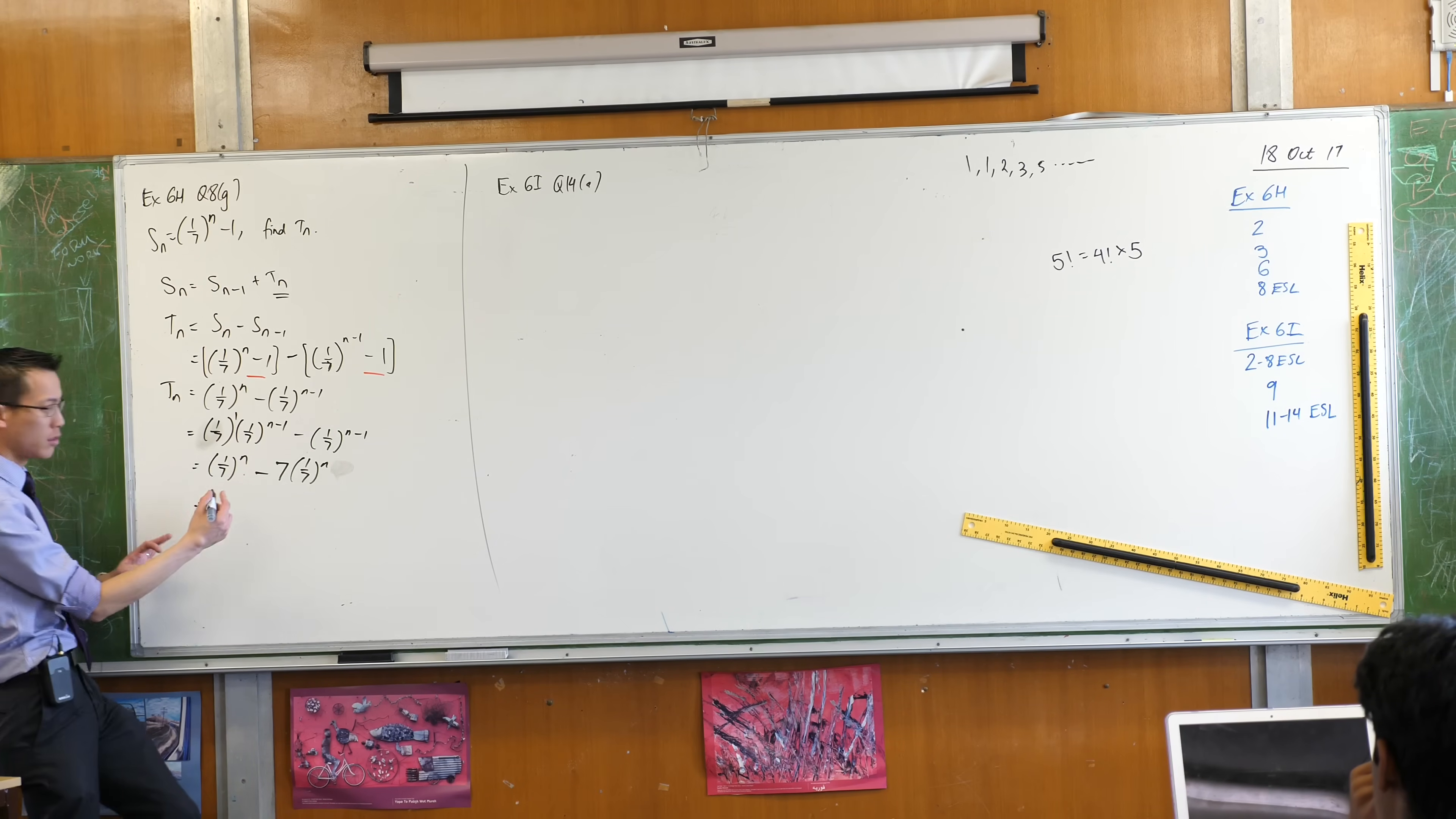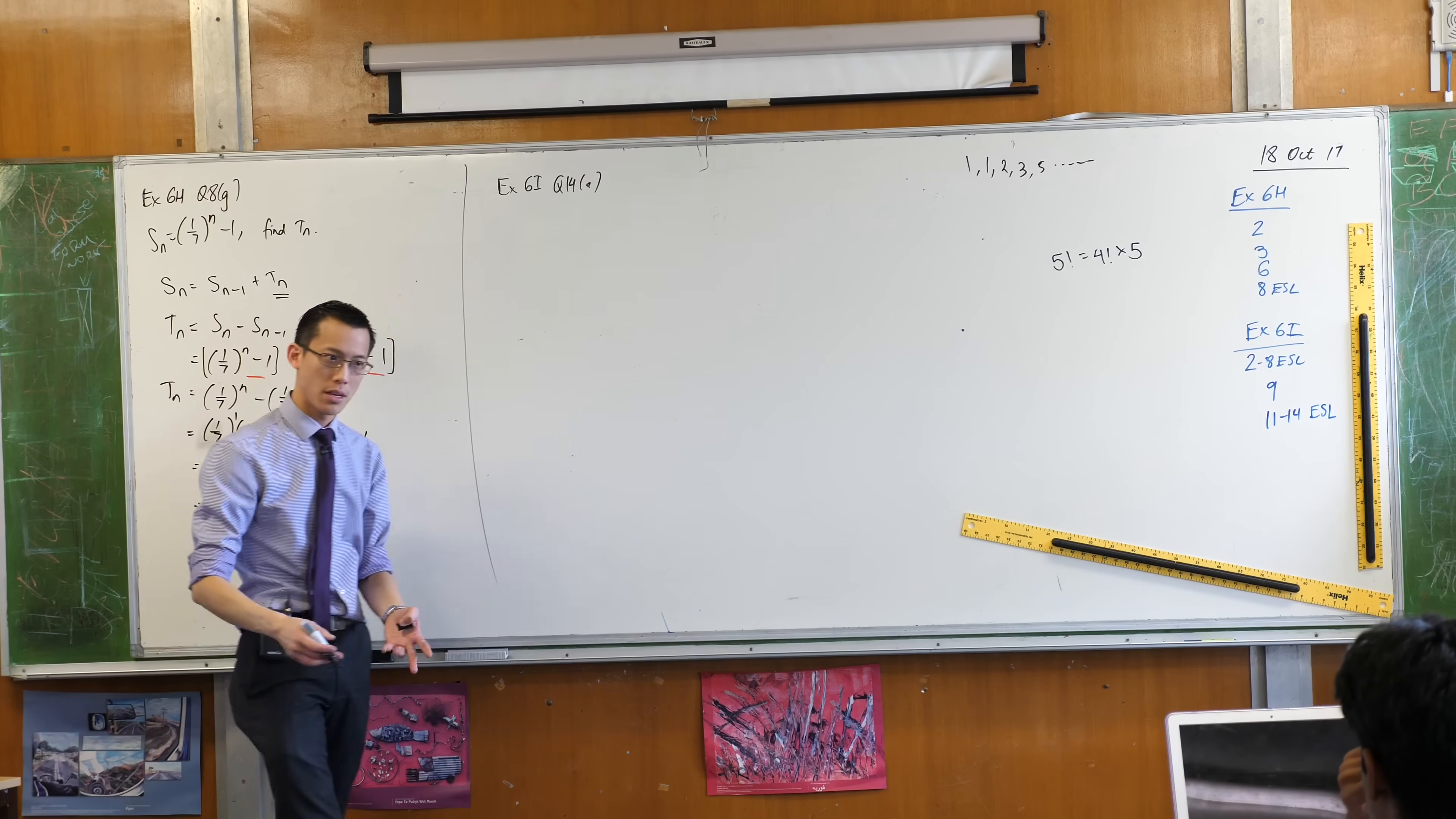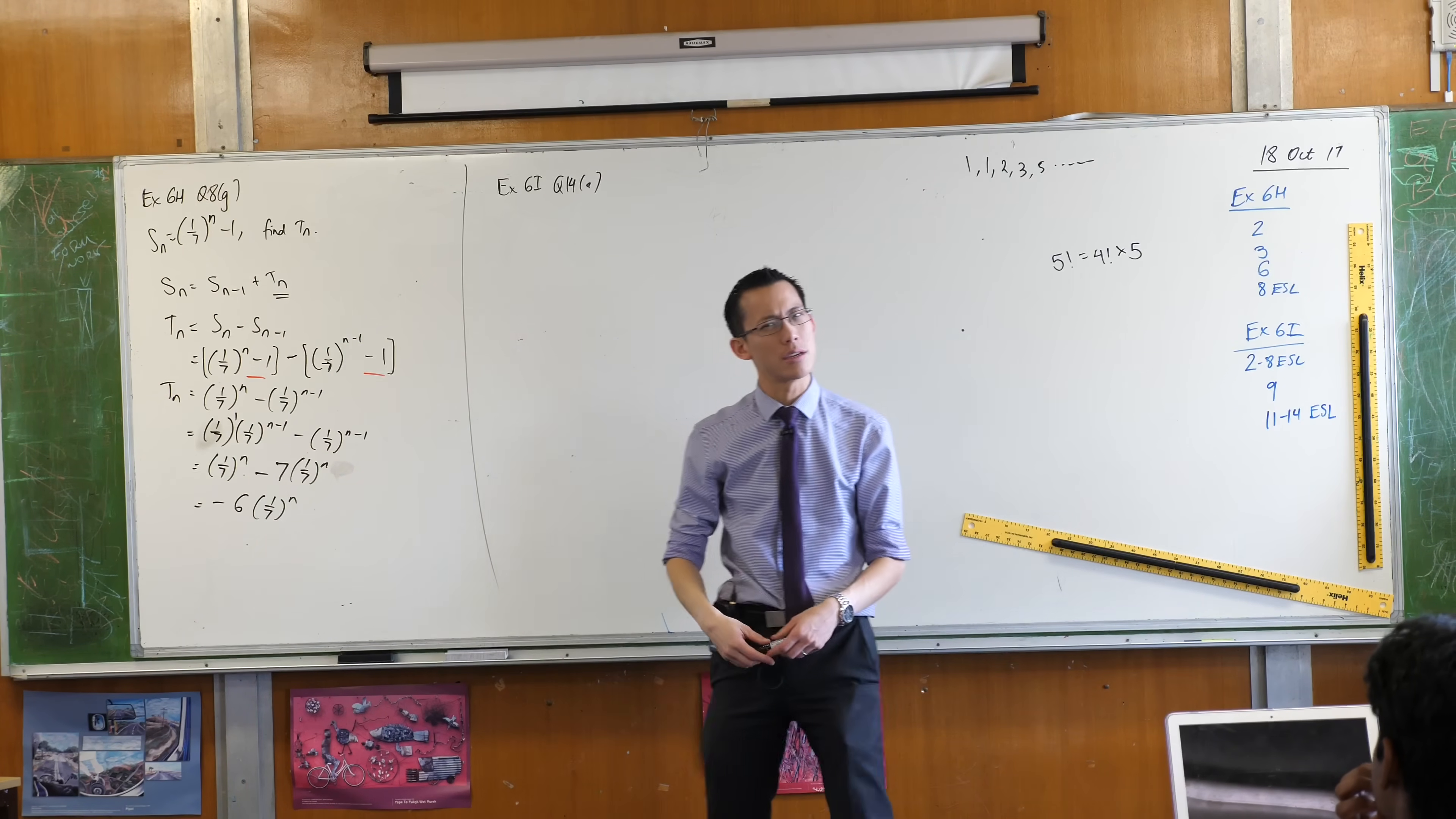Can you collect like terms for me? How many will I have overall? It'll be negative 6 of this object, which is a 7th to the power of n. Does that make sense? So you need to use some of your index law stuff, which is going to come up a lot because every time you do these general terms, these powers are going to come up quite frequently, especially with GPs.